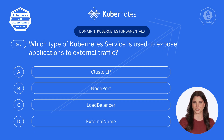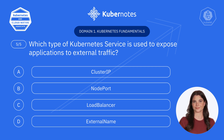Let's dive into question five. Which type of Kubernetes service is used to expose applications to external traffic? A. ClusterIP. B. NodePort. C. LoadBalancer. D. ExternalName.